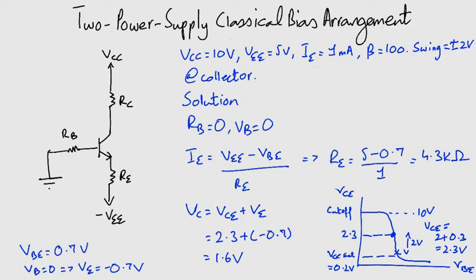Now finding RC is very easy. We take the value of alpha to be 1, and so IC equals IE, and it is 1 milliampere, and RC comes out to be 8.4 kilo ohms.